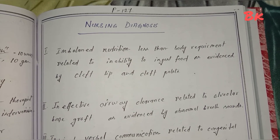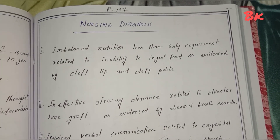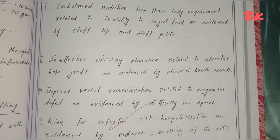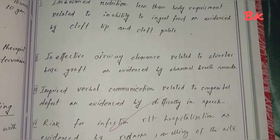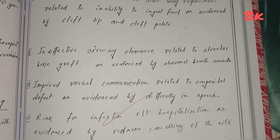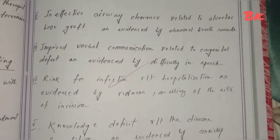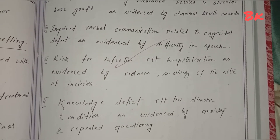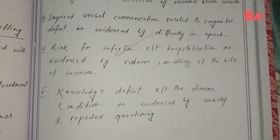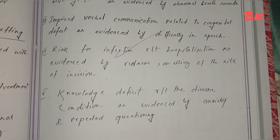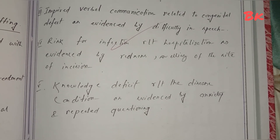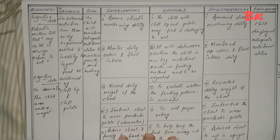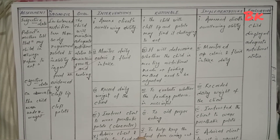Nursing diagnoses: 1) Imbalanced nutrition, less than body requirement, related to inability to ingest food as evidenced by cleft lip and cleft palate. 2) Ineffective airway clearance related to alveolar bone graft as evidenced by abnormal breathing sounds. 3) Impaired verbal communication related to congenital defect as evidenced by difficulty in speech. 4) Risk for infection related to hospitalization as evidenced by redness and swelling at the incision site. 5) Knowledge deficit related to disease condition as evidenced by anxiety and repeated questioning. Care plans follow.